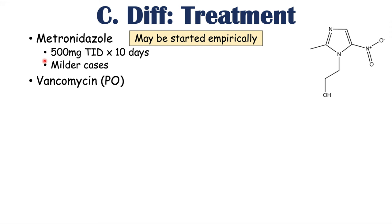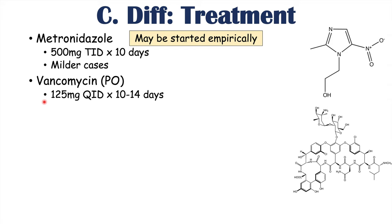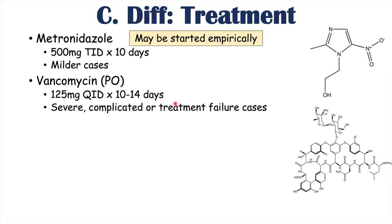Vancomycin PO (by mouth) can also be used. The regimen is often 125 mg QID (four times a day) for 10 to 14 days, and is more likely used in severe, complicated, or treatment failure cases — where metronidazole was tried but didn't work. Vancomycin is often given IV for other infections because it doesn't cross membranes easily, but for C. diff — because it's in the gastrointestinal tract — PO vancomycin stays in the GI tract and works well without needing to cross the gastrointestinal mucosa.